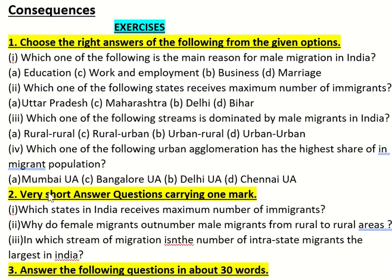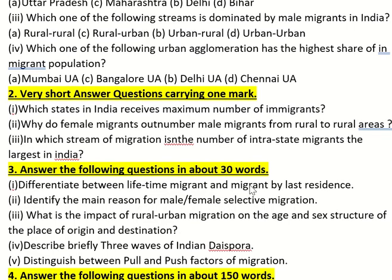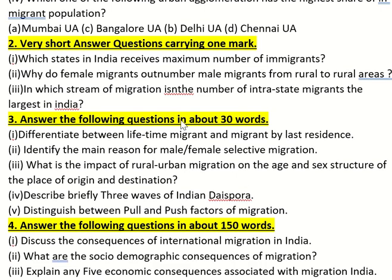Which one of the following urban agglomerations has the highest share of immigration? Which one of the following states has the highest share of immigration? And which stream of migration is the largest — where intrastate migrants are in the middle of the country?